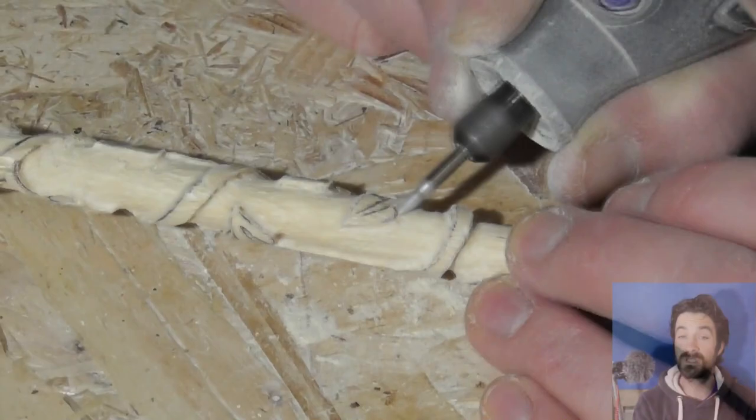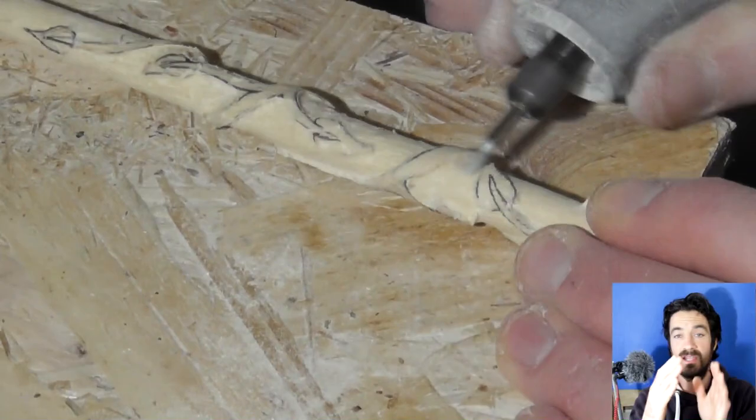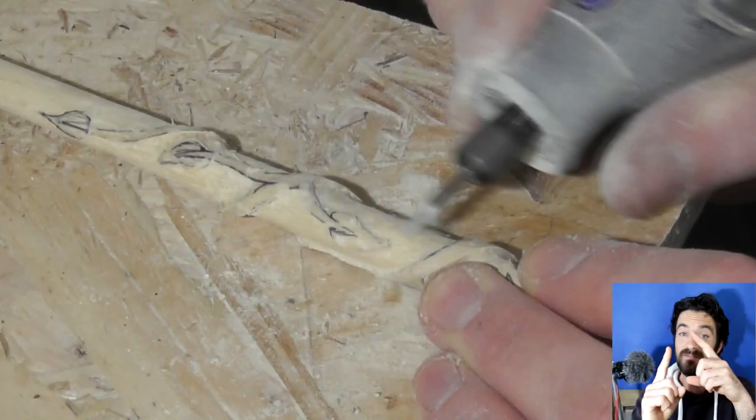It's also the same bit that I used to do the details on the leaves, so where the leaves have almost a heart shape and then they have a line either side of the actual stem of the leaf or the shaft of the leaf.